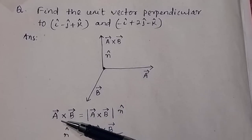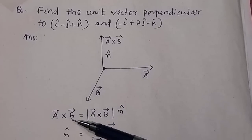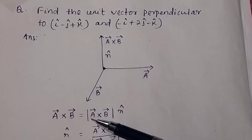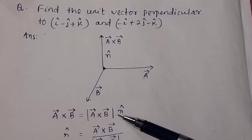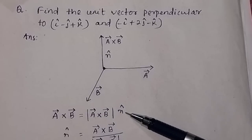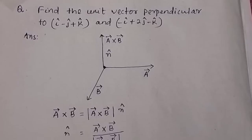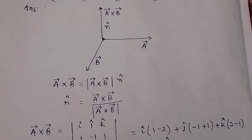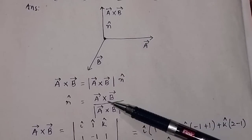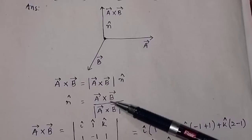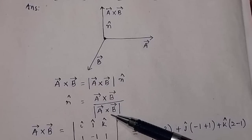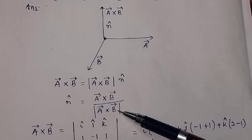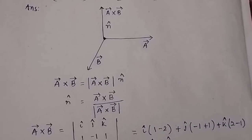So cross product of a and b — a×b can be written as the magnitude of the cross product multiplied by the unit vector, so that we can find out the unit vector n-cap. So n-cap will be equal to a×b divided by the magnitude of a×b.